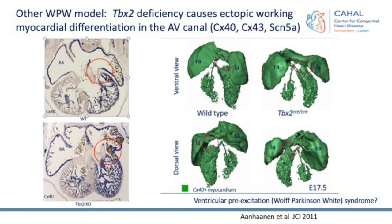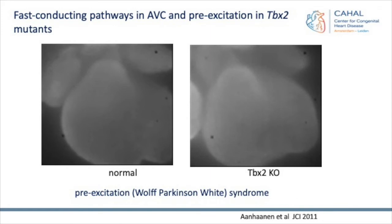Another model from Amsterdam from the Vincent Christoffels group looked at TBX2 deficiency. TBX2 prevents proliferation of working myocardium in the AV canal, so in the knockout model you see very large areas of left-sided pathways. In green is connexin 40-positive myocardium, and you can see large accessory pathways on the left side. They also did optical mapping studies, showing normal apex-to-base activation in wild type and clearly visible large accessory pathway conduction in the knockout model.